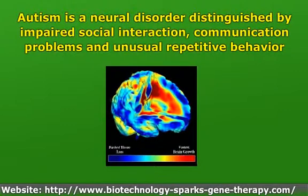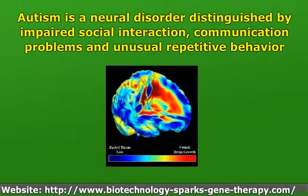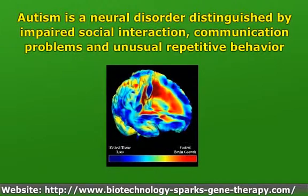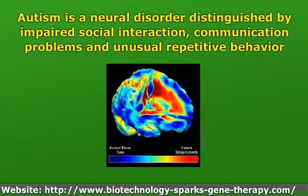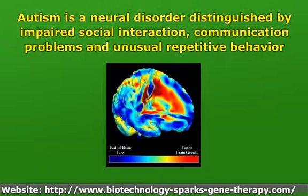Autism has a strong genetic basis. It is the most severe of a group of pervasive developmental disorders, including Rett syndrome, childhood disintegrative disorder, Asperger syndrome, and PDD not otherwise specified. Autism affects 1 in every 110 American children and 1 in 70 boys. Males outnumber females at least 4 to 1. Autism is the fastest growing developmental disability, increasing 10% annually.